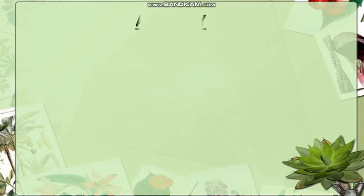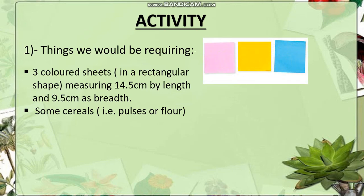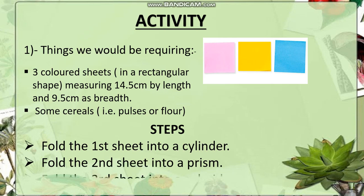So let us do this with the help of an activity. The things that we would be requiring in this activity are three colored sheets that should be cut in a rectangular shape with 14.5 as length and 9.5 as breadth. We would also be needing some cereals like pulses or flour. The steps of the activity are as follows: we need to fold the first sheet into a cylinder, the second into a prism, and the third into a cuboid.